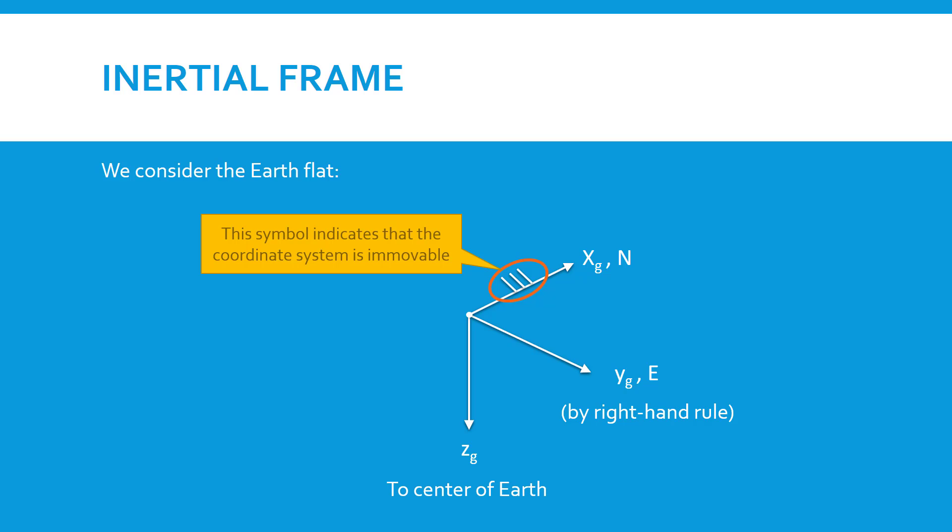We also will use this symbol, these three little lines, to indicate that the coordinate system is fixed. This is a symbol often used in engineering to indicate a stationary object.